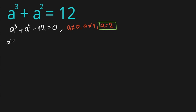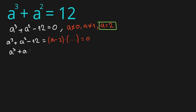So a cubed plus a squared minus 12 can be written as (a minus 2) times some other factor in brackets, all equal to zero. This is equivalent to dividing a cubed plus a squared minus 12 by (a minus 2), which gives us the other roots we need to find.